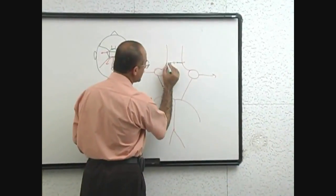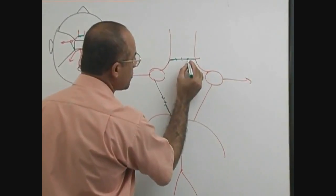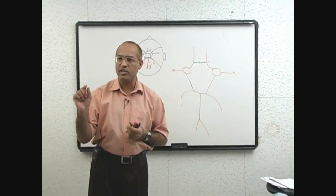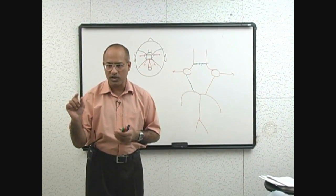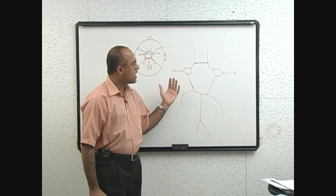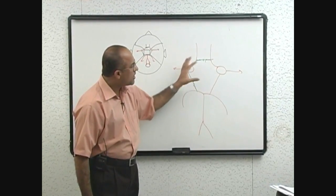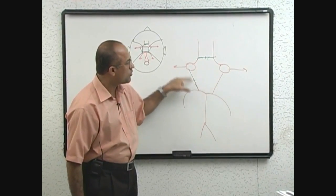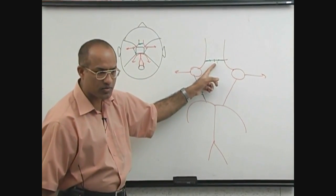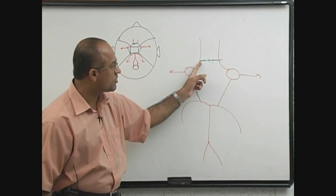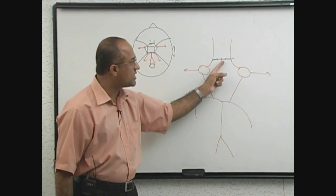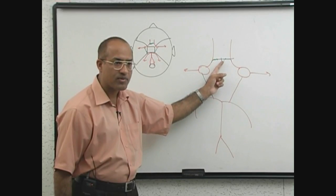One thing worth mentioning: the anterior communicating artery is the most common site for berry aneurysms. Aneurysms are abnormal dilatations of part of an artery. About 60% of aneurysms in the central nervous system occur in the circle of Willis, and within the circle of Willis, aneurysms are most common at the anterior communicating artery or its junction with the anterior cerebral artery.